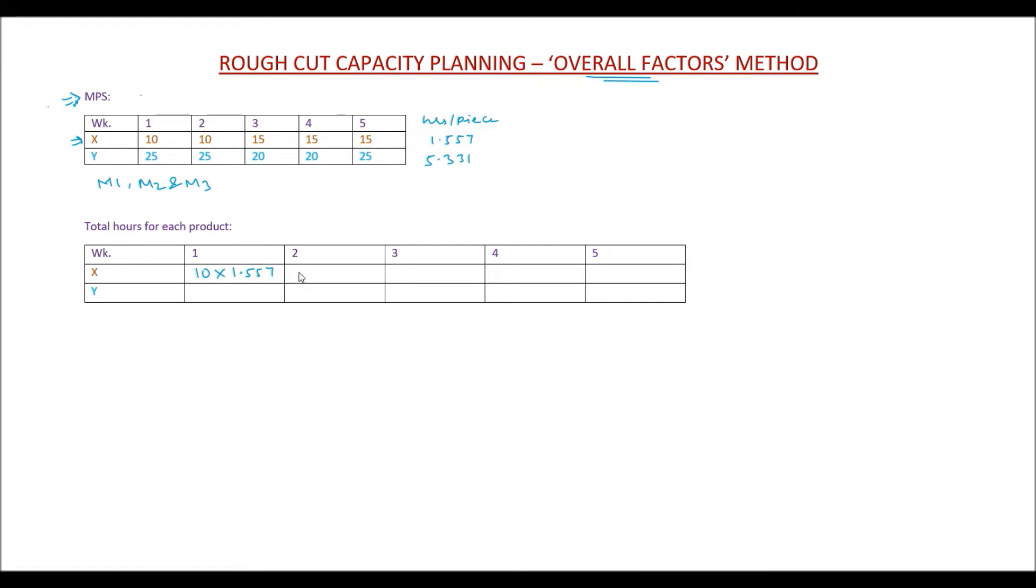Same for week 3: 15 into 1.557. For week 4, again 15 into 1.557, and week 5 also 15 into 1.557.